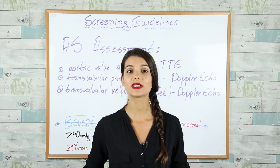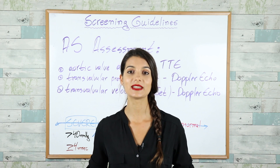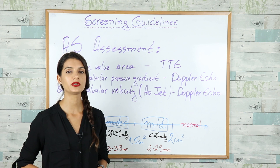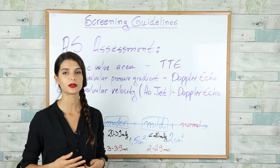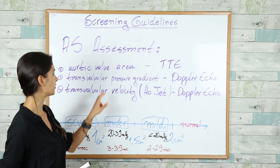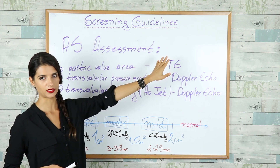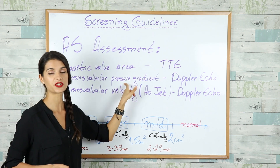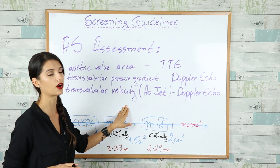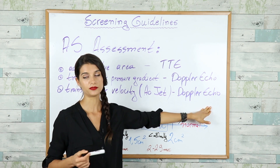In this video we will discuss the aortic regurgitation and the aortic stenosis assessment guidelines and surgical indications. When a patient comes to you with aortic stenosis, you have to do a complete assessment of the severity of the stenotic valve. We do this with the following parameters: the aortic valve area, calculated with TTE; the trans-valvular pressure gradient, calculated with Doppler echo; and the trans-valvular velocity, also known as the aortic jet, also done with Doppler echo.